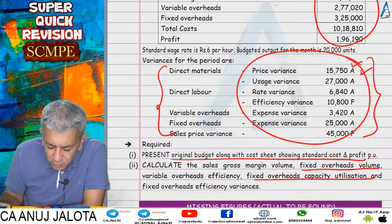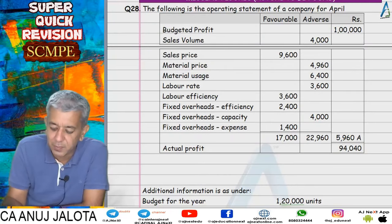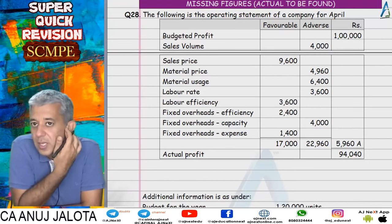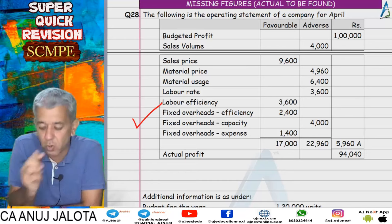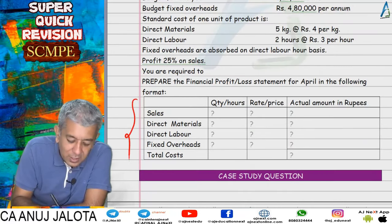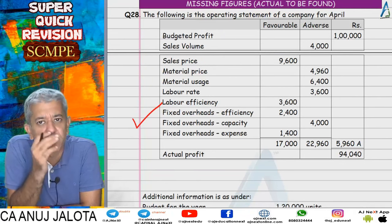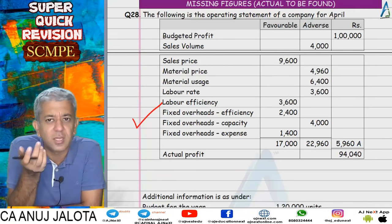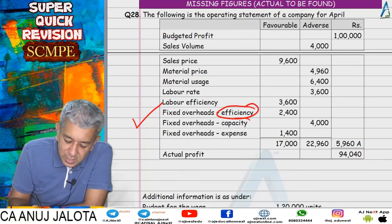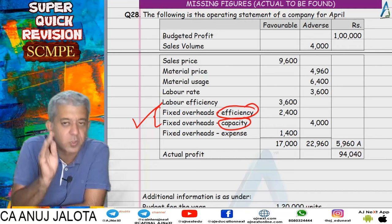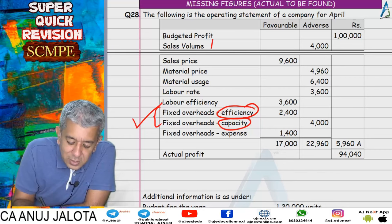Question 28 was exactly like question 27, but in reverse: variances and standard data were given, and we had to find actual data in the given format. Use whichever variances are given and start from there — things will unfold gradually. Here too, efficiency, capacity, and fixed overhead variances were present, so the sum was on absorption costing.